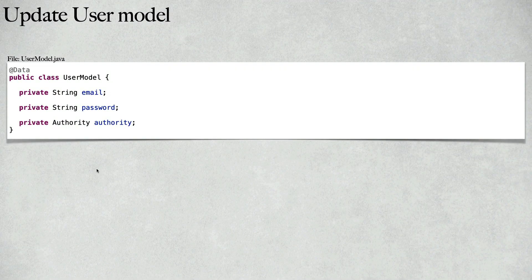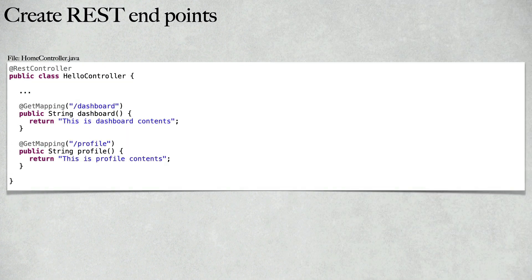The next step is to update the User model as well. Inside the user model, we are going to add the authority field to map the user model data to the user entity. We will also create REST endpoints: slash dashboard and slash profile.